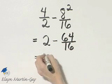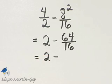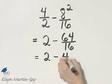So let's see what we have now. 2 minus 64 over 16, or 64 divided by 16 is 4.